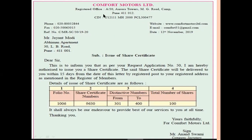This entire section — company name, address, and contact details — forms the letterhead. The second step is mentioning the date: 12th November 2019. After the date, the third part is the reference number. The fourth part is the inside address: the shareholder's name is Mr. Jayant Modi, with address at Abhiman Apartment, 30 LB Road, Pune 411001.